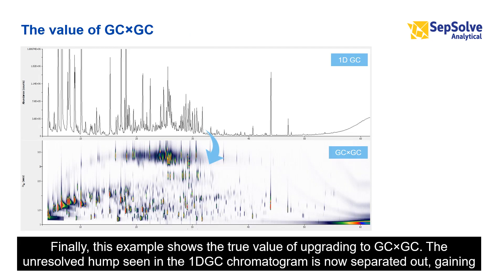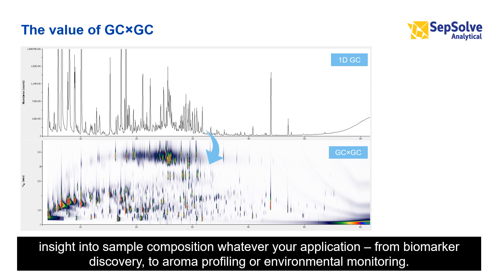This example shows the true value of upgrading to GC×GC. The unresolved hump seen in the 1D-GC chromatogram is now separated out, gaining InSight into the sample composition — whatever your application, from biomarker discovery to aroma profiling or environmental monitoring.